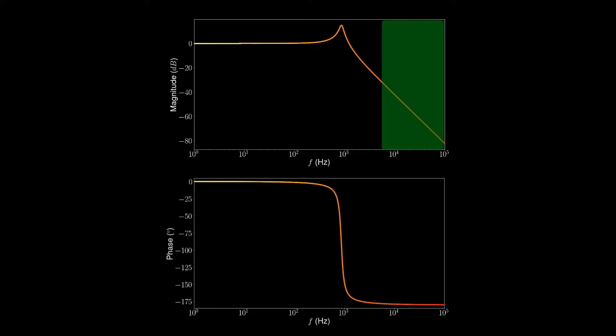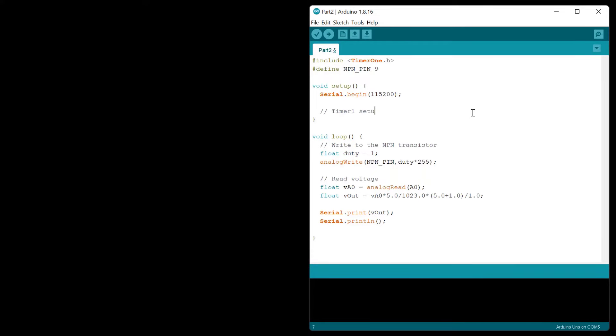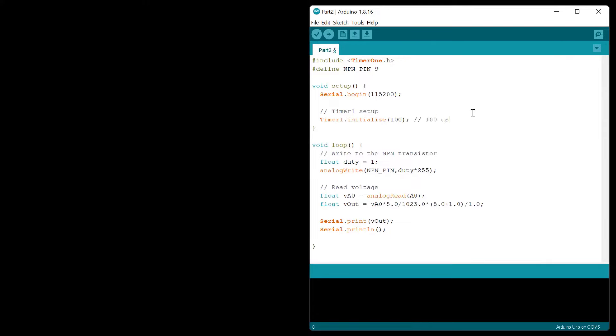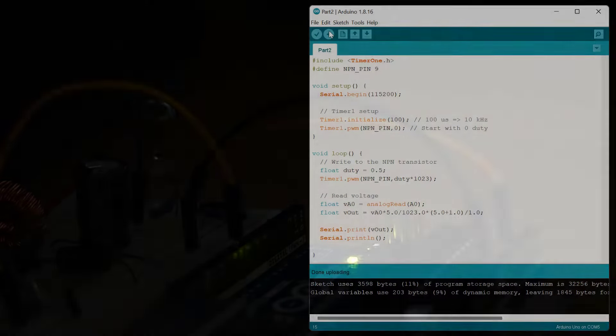To improve the response, you can adjust the PWM frequency delivered by the Arduino using the Timer1 library. To use the Timer1 library, add the header and call the initialize method in the setup. The input value sets the timer period in microseconds, so I'll set it to 100 to yield a frequency of 10 kHz. The PWM method sets the duty cycle. Unlike a typical analog write command, which accepts values from 0 to 255, the PWM method accepts values from 0 to 1023. I'll set this to half the max for 50% duty. Now let's run the code and see if the filter works at the new frequency.